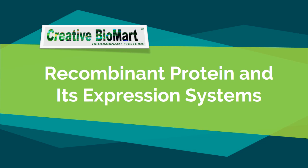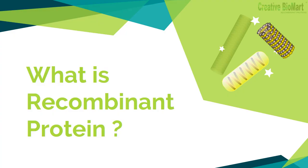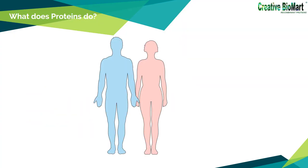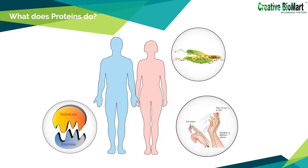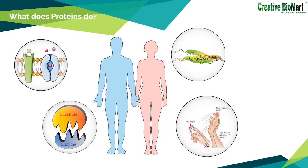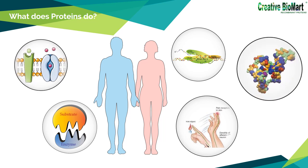Today, we want to talk about protein and its expression systems. Let's start with what is recombinant protein. Proteins are one of the most important biological molecules for life, and these proteins perform a vast array of functions within organisms, including catalyzing metabolic reactions, DNA replication, responding to stimuli, and transporting molecules from one location to another.